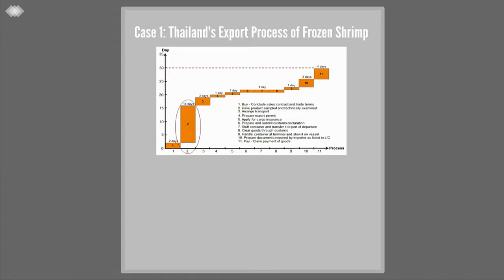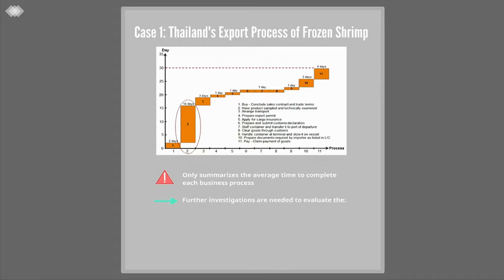In this case, the business process of 'half product sample and examine' takes an extensively long time — 14 days — to complete compared to other processes. However, the time procedure chart is not informative enough; it only summarizes the average time required to complete each business process under scope. To find out causes of delay, process analysts need to investigate further by examining relevant activity diagrams, process descriptions, related laws, rules and regulations, and other supporting information. Other issues to investigate include efficiency — for example, caused by any redundant or unnecessary requirements — and effectiveness, such as the amount of rework and the predictability of business processes.